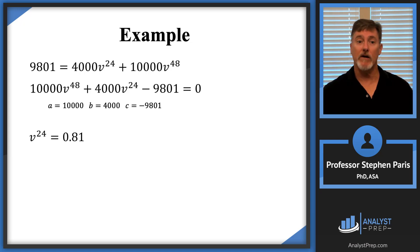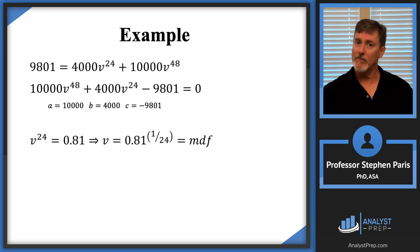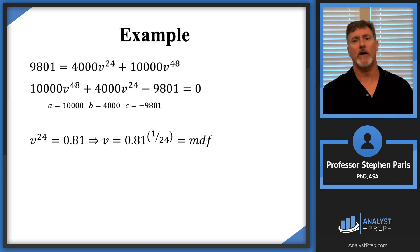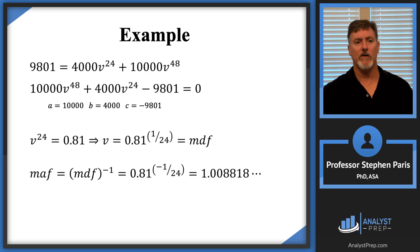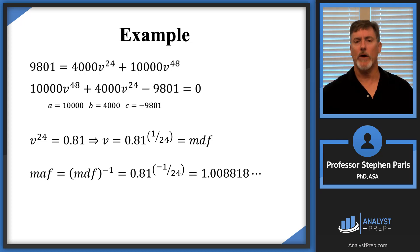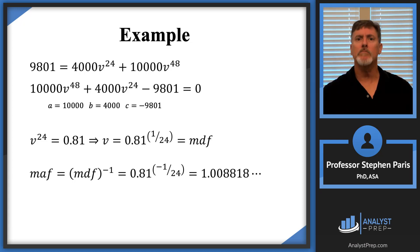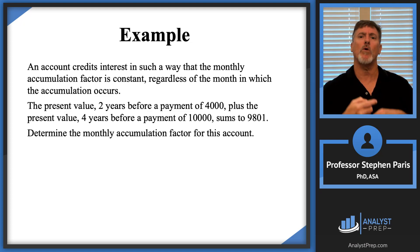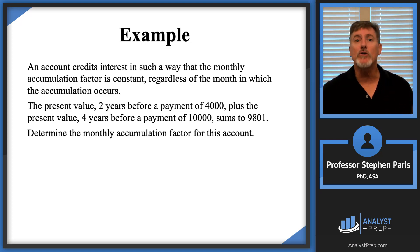With v to the 24th equal to 0.81, I can solve for v — the monthly discount factor — by raising both sides to the 1/24th power. But the problem asked for the monthly accumulation factor, which is the reciprocal of the monthly discount factor. So the monthly accumulation factor is 0.81 to the power of negative 1/24th, giving approximately 1.008818. Keep that answer in mind, because now I want to show what would have happened if we'd chosen years as the time unit instead.